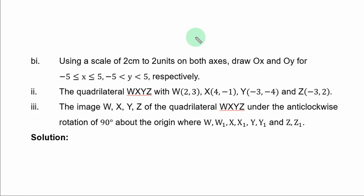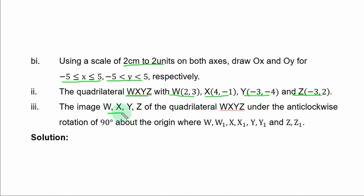Question 12b(i). Using a scale of 2 cm to 2 units on both axes, draw Ox and Oy for -5 ≤ x ≤ 5 and -5 ≤ y ≤ 5. Plot the quadrilateral WSYZ with W(2,3), S(4,-1), Y(-3,-4), Z(-3,2). Join them together to form the quadrilateral.